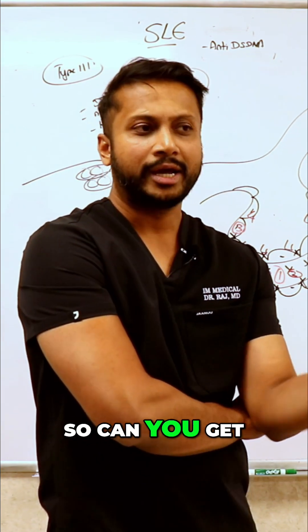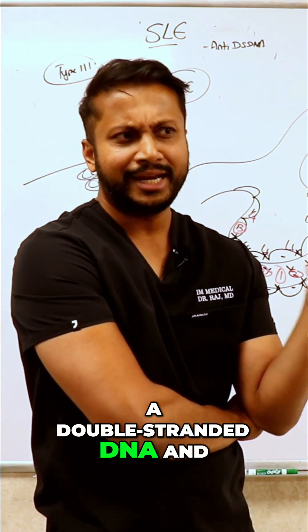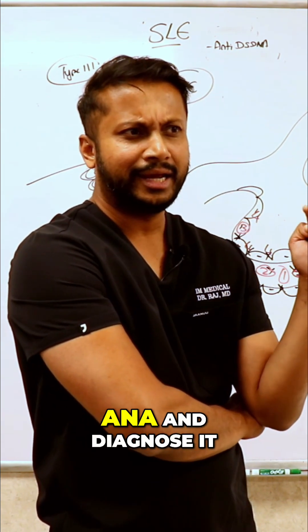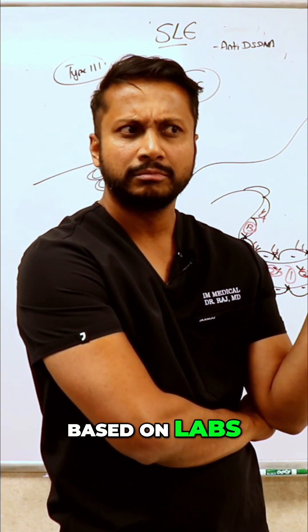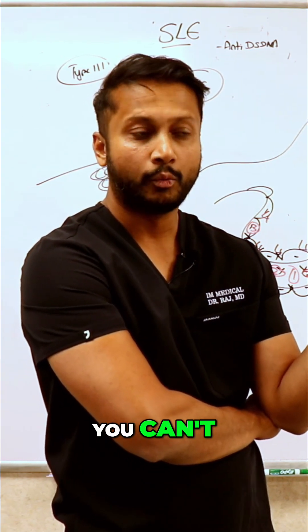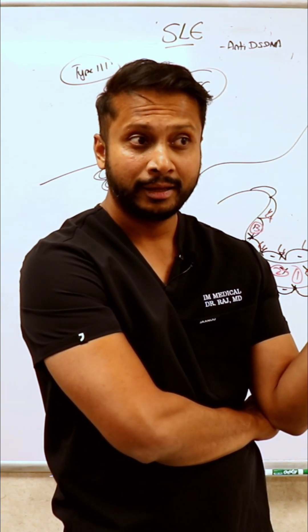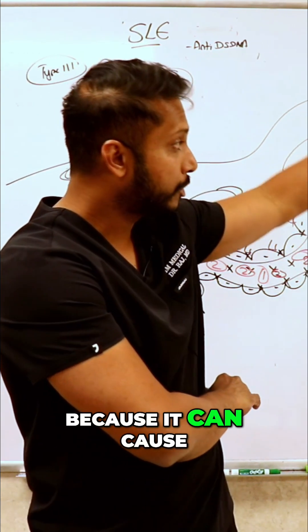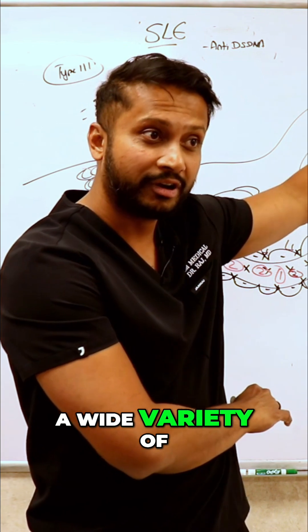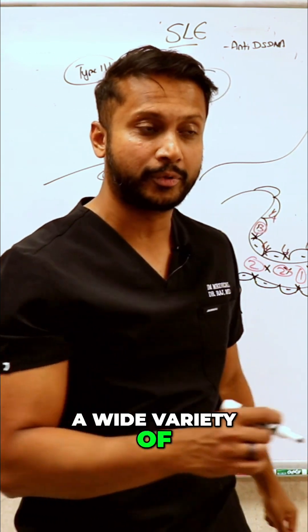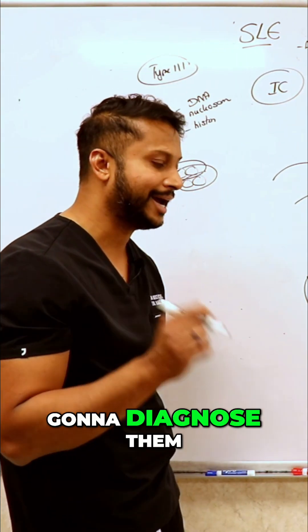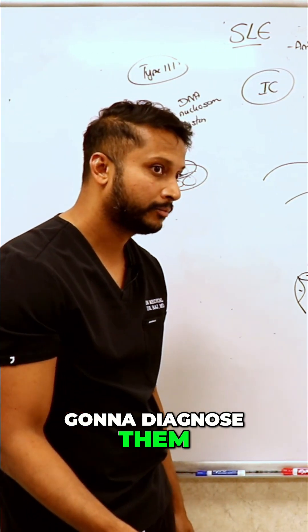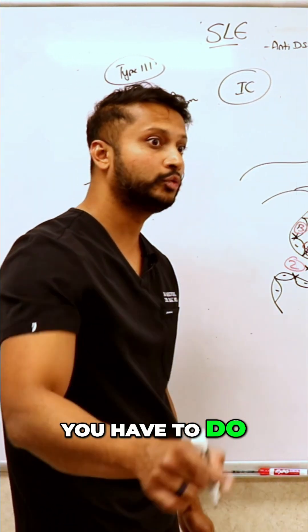Can you get a double-stranded DNA and ANA and diagnose it based on labs? You can't — why? Because lupus can cause a wide variety of problems in the kidney. So how are you going to diagnose them? You have to do a biopsy.